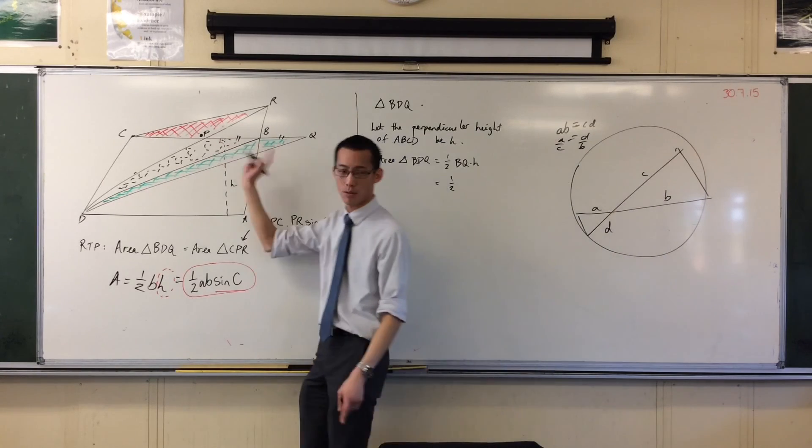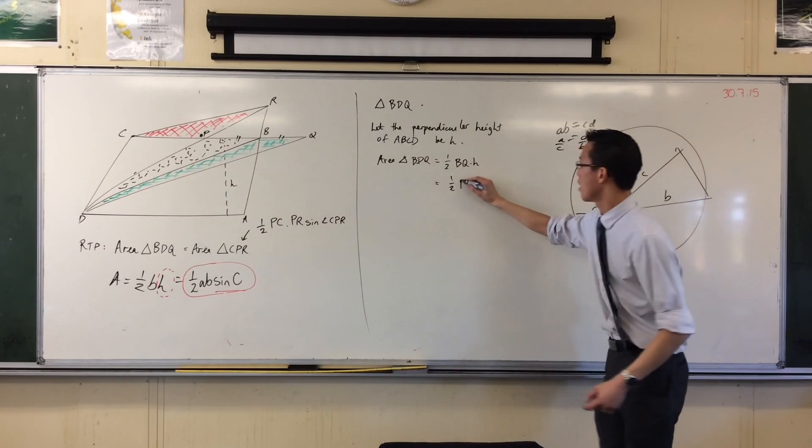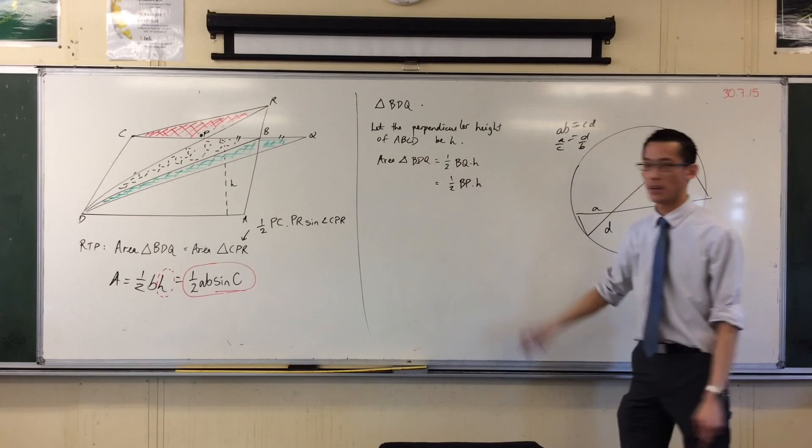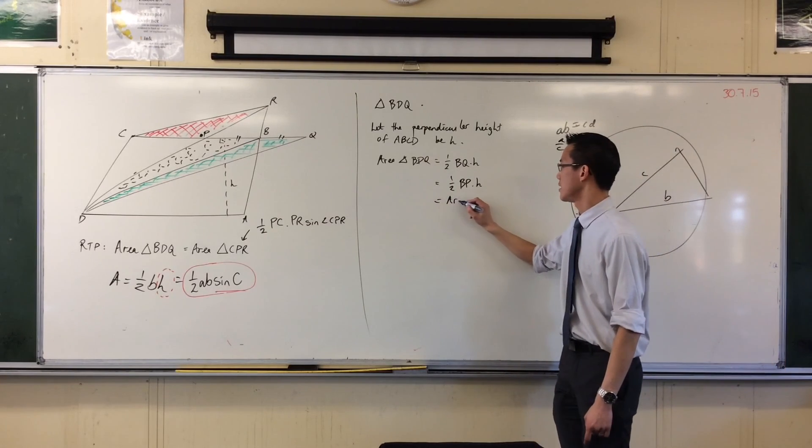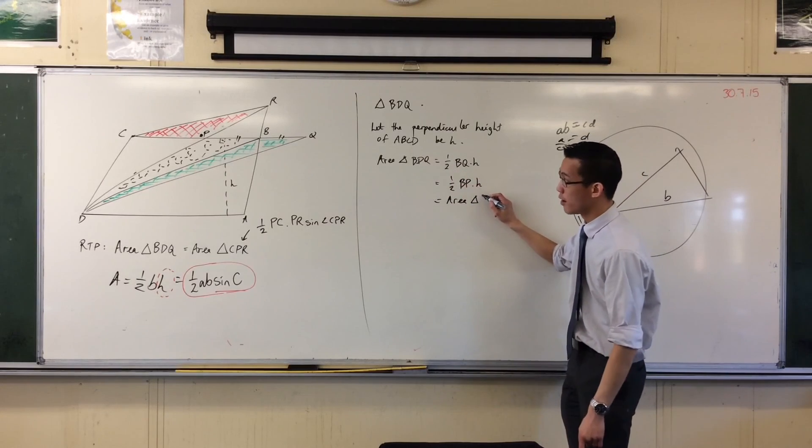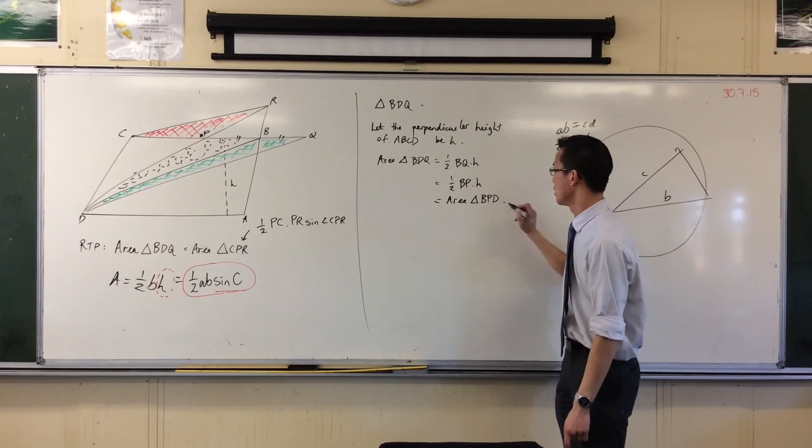But then I can say, that's equal to a half, BQ is given to be equal to BP. Half BP times the height. You following? So that is this black dotted triangle in the middle. B, P, D.